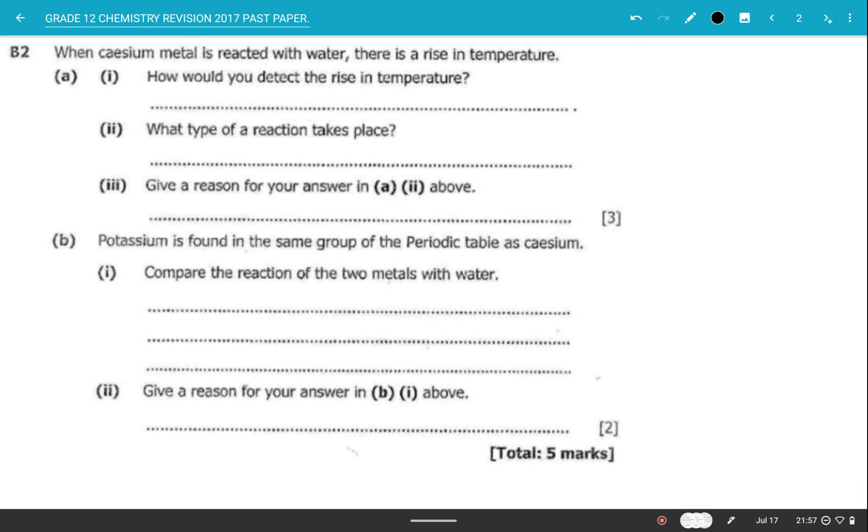In part B2, it says when cesium metal is reacted with water there is a rise in temperature. The first part says how would you detect the rise in temperature. Basically we can detect the rise in temperature by using a thermometer, but we just can't say using a thermometer just like that.